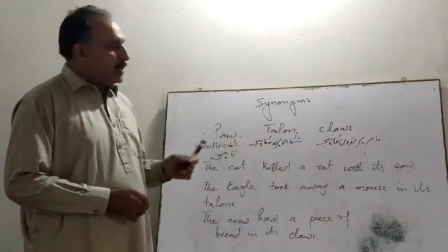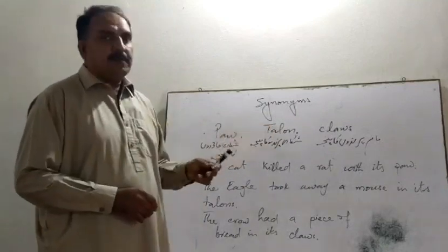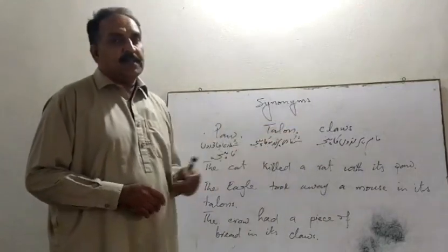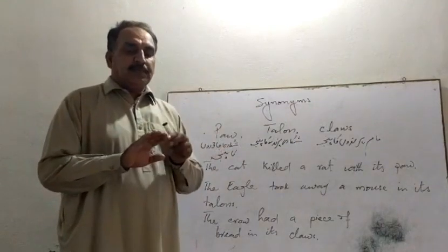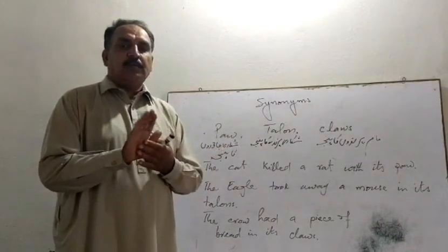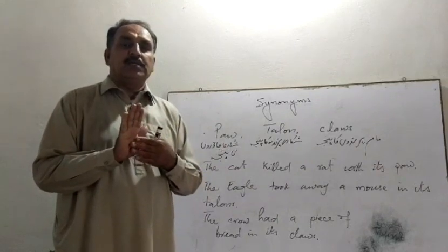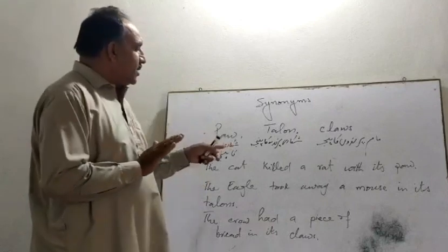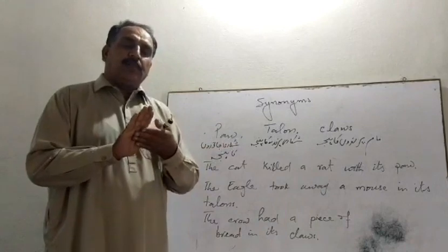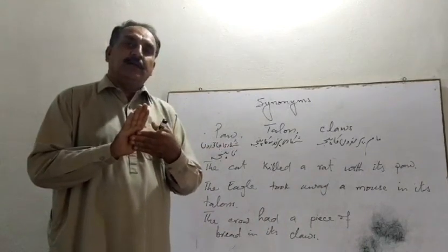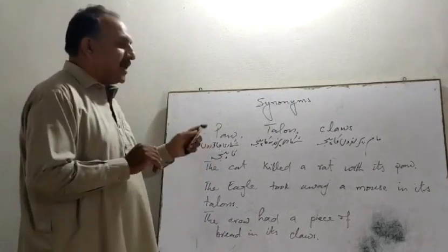Pa کا کیا مطلب ہے؟ ان تینوں کا مطلب اردو میں پنجا ہے۔ Pa کا مطلب پنجا، Talon کا مطلب پنجا، Claw کا مطلب پنجا۔ Pa وہ پنجا ہوتا ہے جس کے پنجے چھوٹے ہوں اور اس کا ایک پام ہو، ایک ہتیلی ہو۔ جیسے شیر، چیتا، بلی وغیرہ جیسے شکاری جانور ہوتے ہیں، ان کے چھوٹے چھوٹے پنجے ہوتے ہیں اور ایک پام ہوتا ہے۔ بندر کا بھی ایک پا ہوتا ہے کیونکہ اس کی ہتیلی ہوتی ہے، تو اس کو paw کہتے ہیں۔